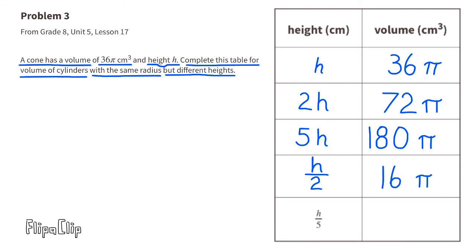The last one is h over 5, that means the height divided by 5. Since we're dividing the height by 5, we need to divide the volume by 5: 36 divided by 5 times π cm³. We can leave this as an improper fraction or we can write it as a decimal.